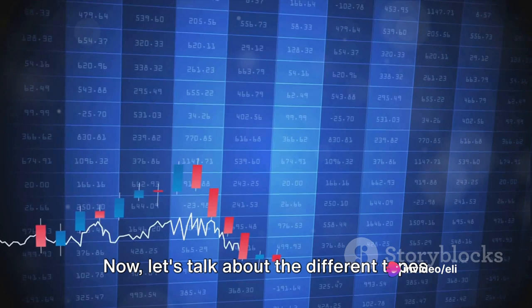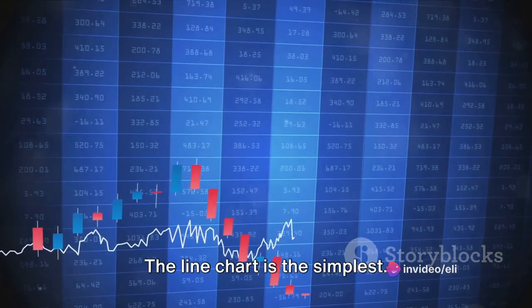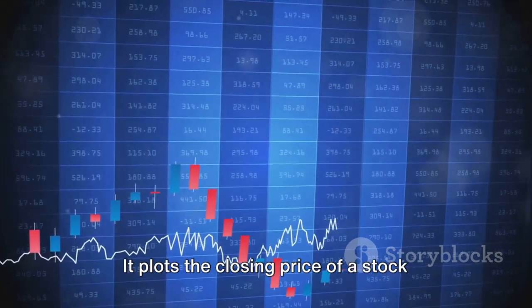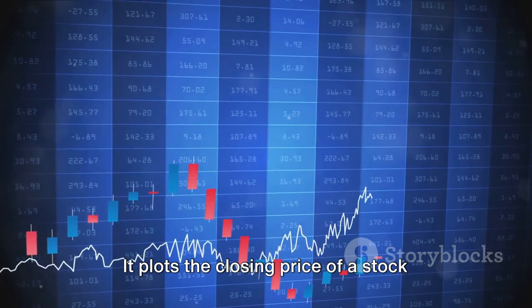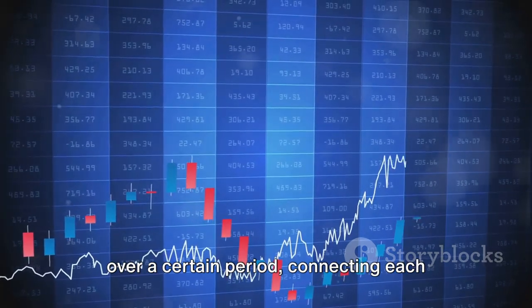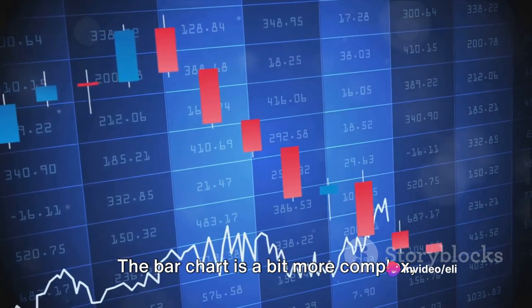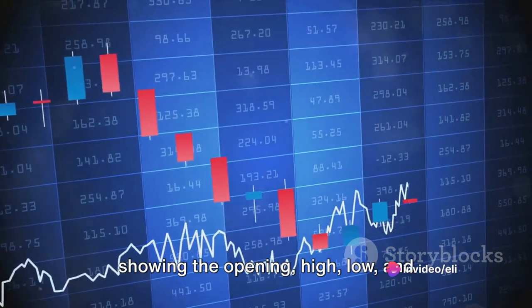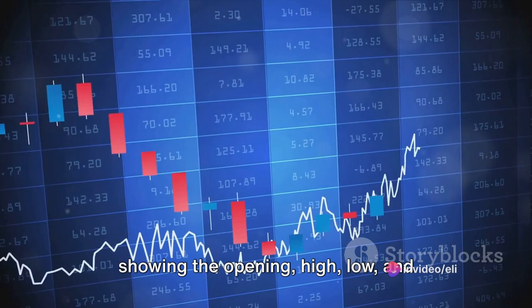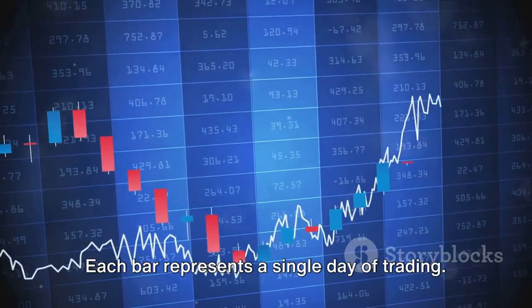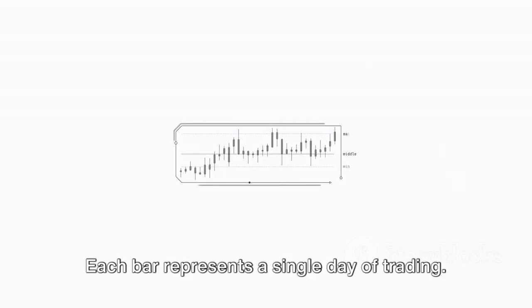Now let's talk about the different types of stock charts. The line chart is the simplest. It plots the closing price of a stock over a certain period, connecting each day's closing price with a continuous line. The bar chart is a bit more complex, showing the opening, high, low, and closing prices for each trading day. Each bar represents a single day of trading.